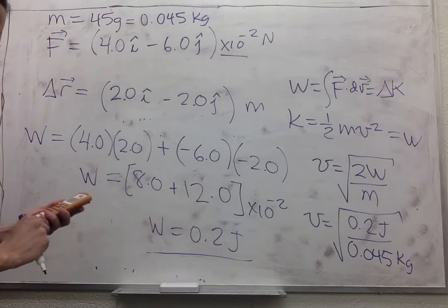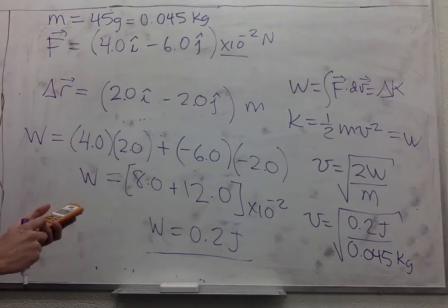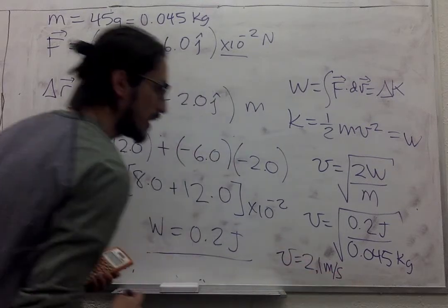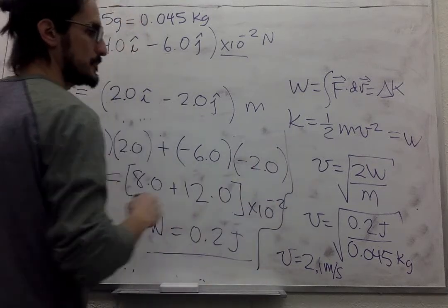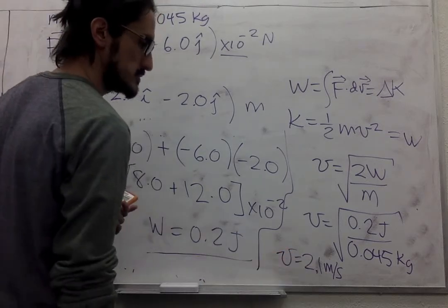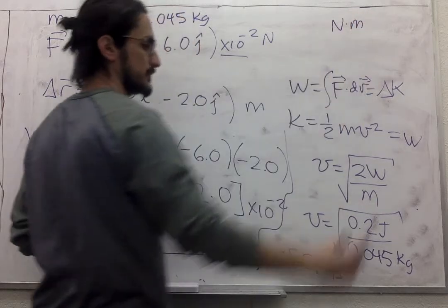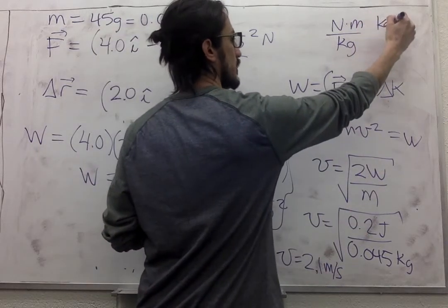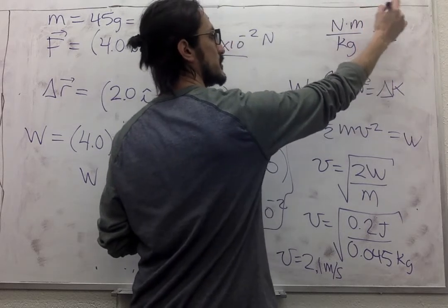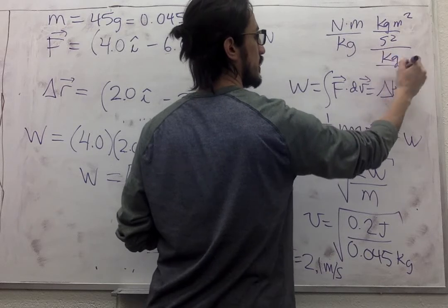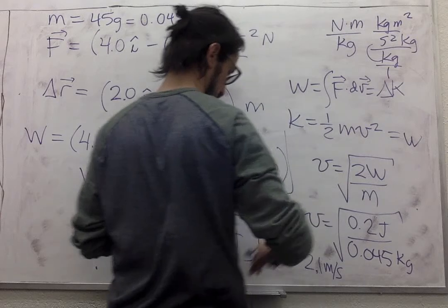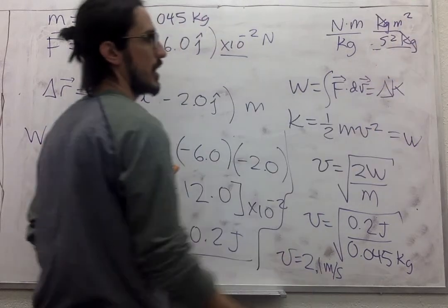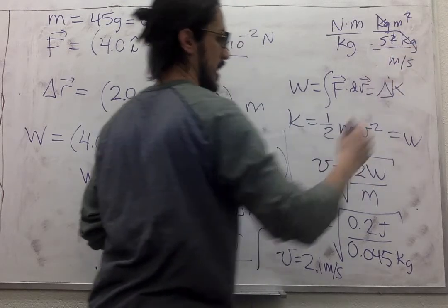It's 2.1 meters per second. Let's make sure that the units are correct. Joules is newton times meter divided by kilogram. Newton is kilogram meter over second squared times this meter over kilogram. We move this one over here. We get rid of the kilograms. We take the square root. We get meters per second.